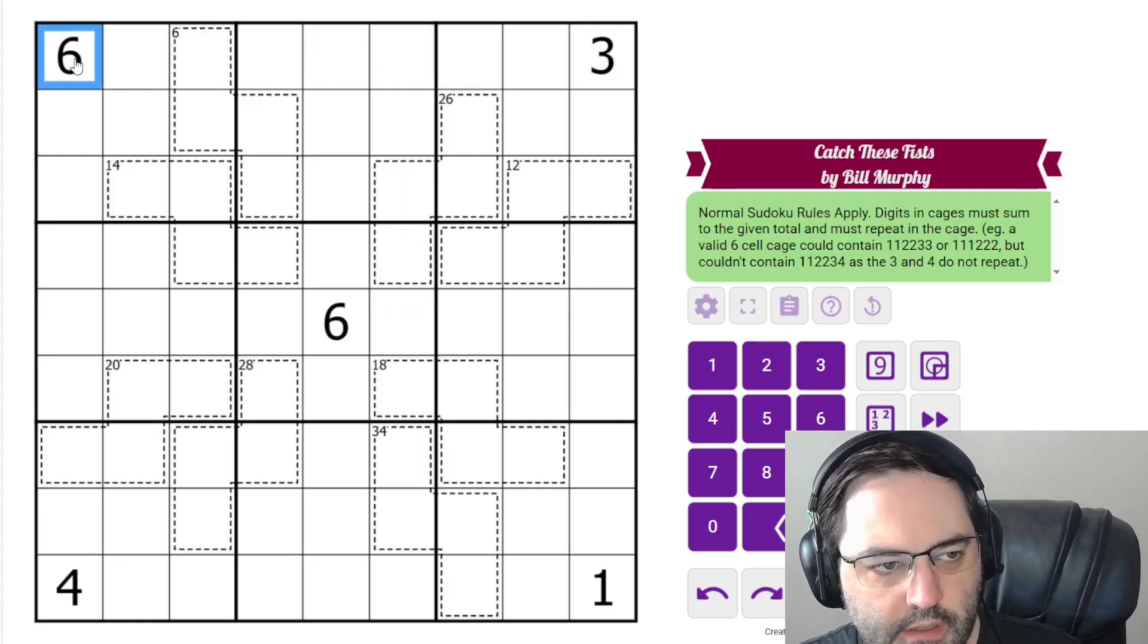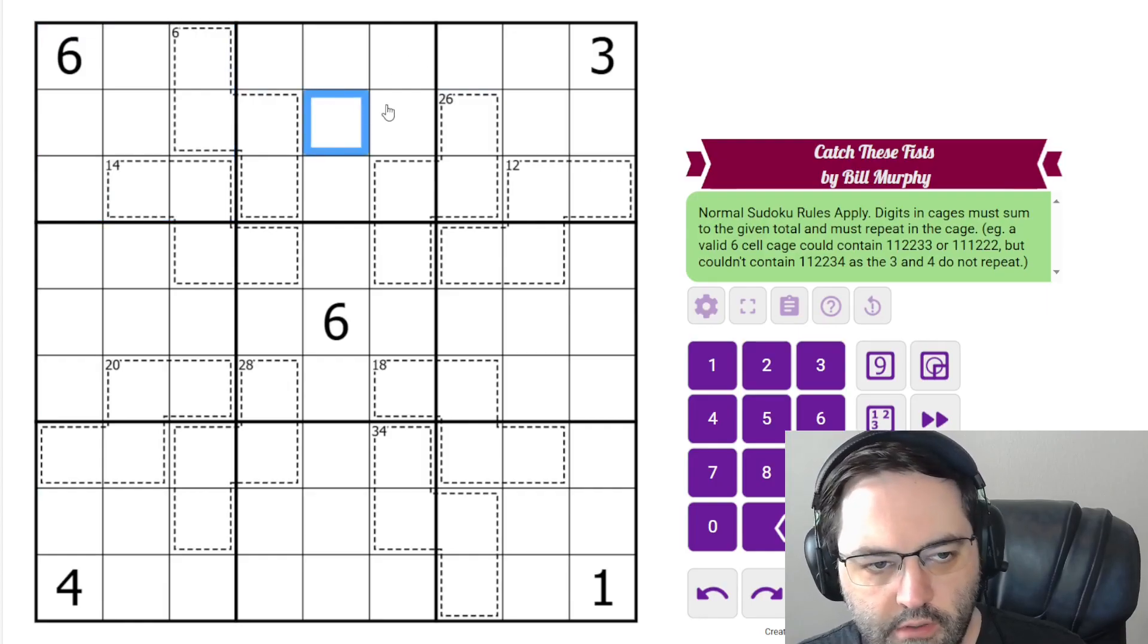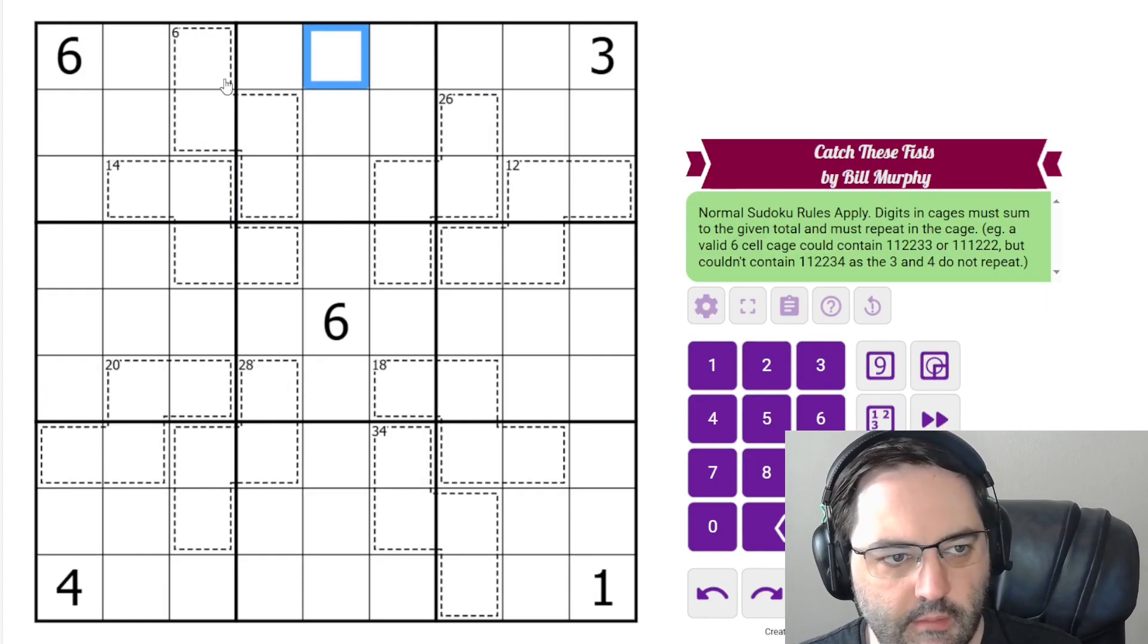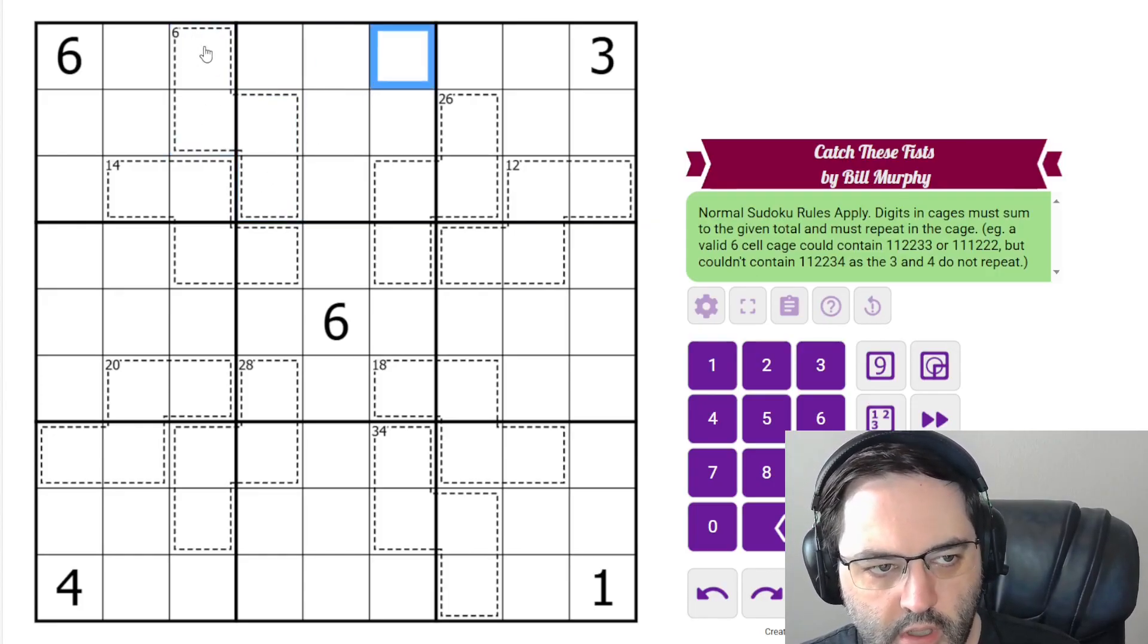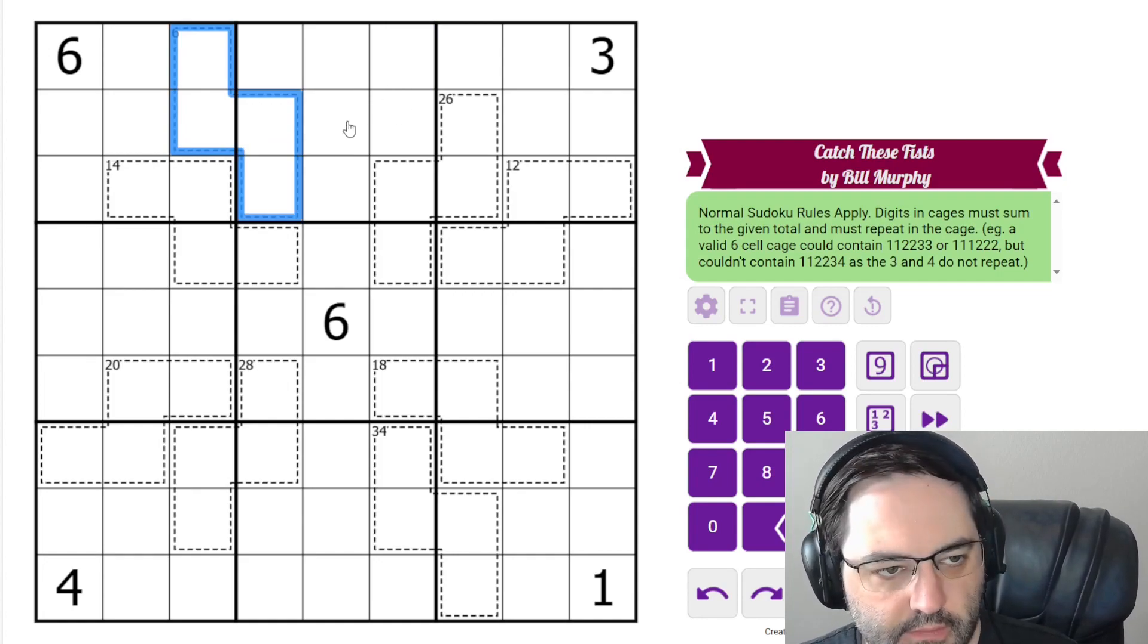We have normal Sudoku rules, one to nine in each row, column, and three by three box. Ordinarily with Killer we have cages, and there are two things to keep in mind. The digits in the cages must sum to the total, and the digits can't repeat. That second one we do not have in this puzzle.